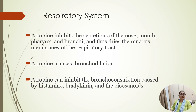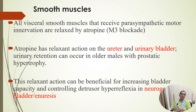On the respiratory system, atropine inhibits secretion from the nose, mouth, pharynx, and bronchi, thus drying the mucous membranes of the respiratory tract. Atropine causes bronchodilation, though it is not used in acute bronchial asthma. Atropine can inhibit bronchoconstriction caused by histamine, bradykinin, and eicosanoids. All vessels with smooth muscle that have parasympathetic motor innervation are relaxed by atropine by blocking M3 receptors.